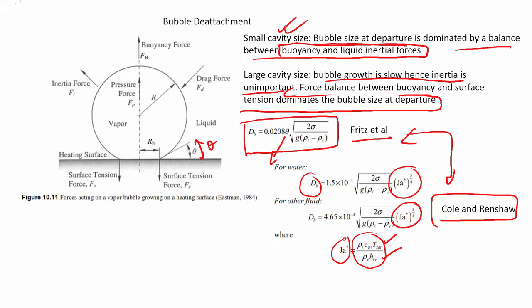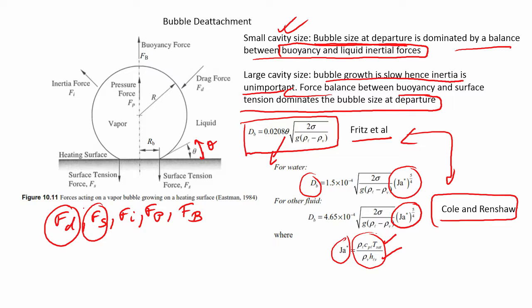Looking at the diagram, there are many forces acting on a bubble at the point of departure. These forces are: fd (drag force), fs (surface tension force), fi (inertial force), fp (pressure force), and fb (buoyancy force).